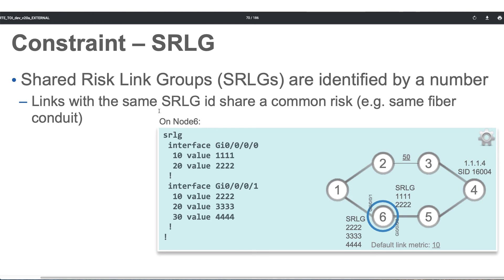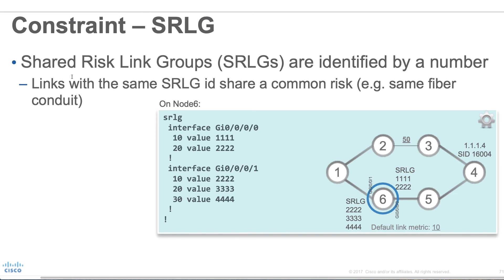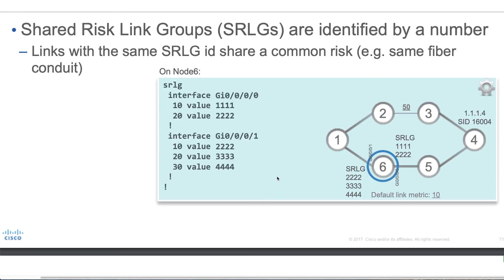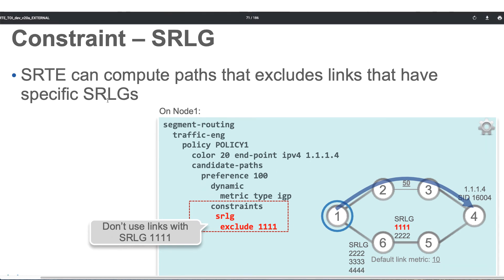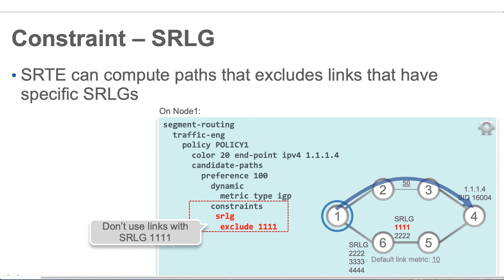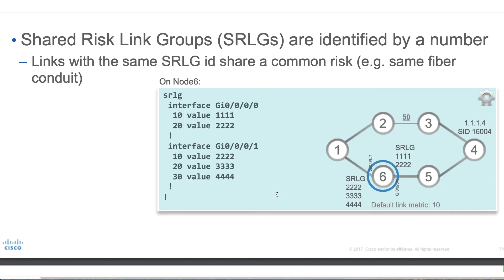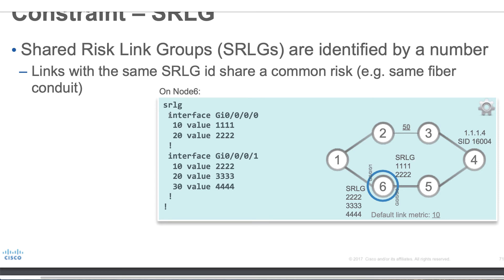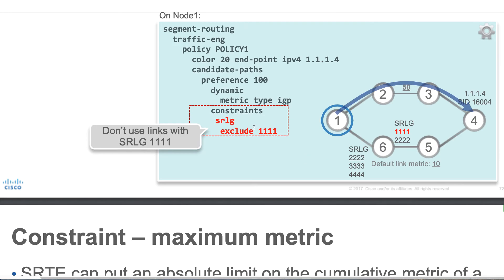We can also configure something called SRLG — shared risk link groups — identified by number. Links within the same SRLG ID share a common risk, such as the same fiber conduit. In this case, we configure an SRLG for interface gig 0/0/6 and assign values: 10 with a value of 1111 and 20 with a value of 2222. When configuring a policy, we can say constraint SRLG exclude 1111. That means simply exclude the risk group with number 1111, which corresponds to gigabit Ethernet 0/0/0/0.